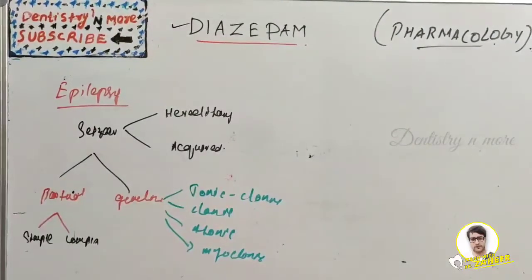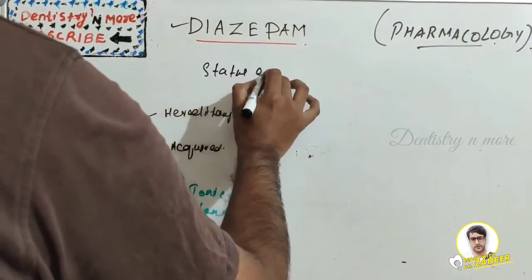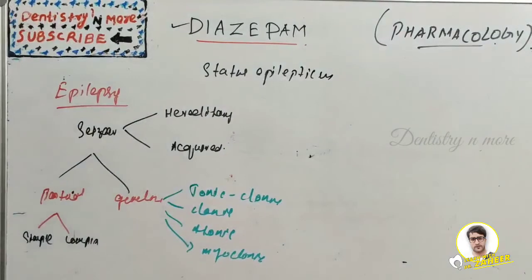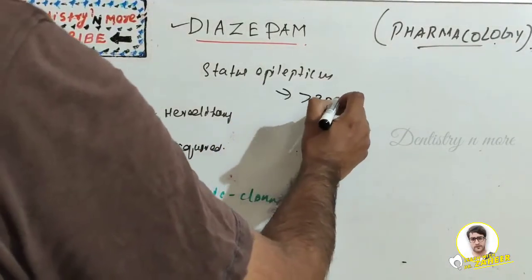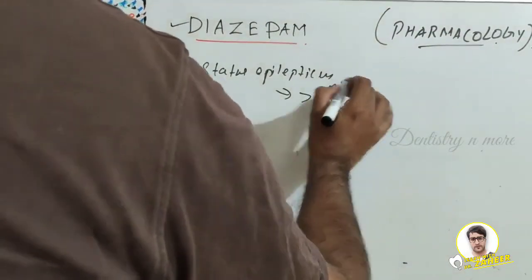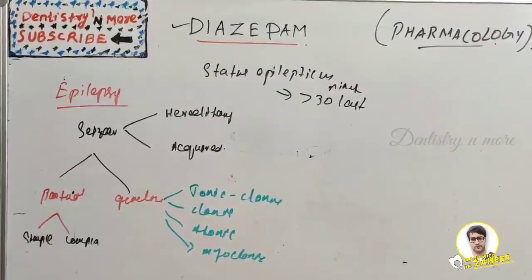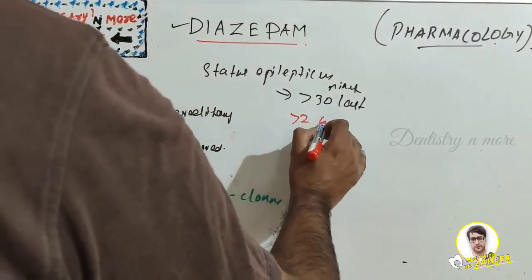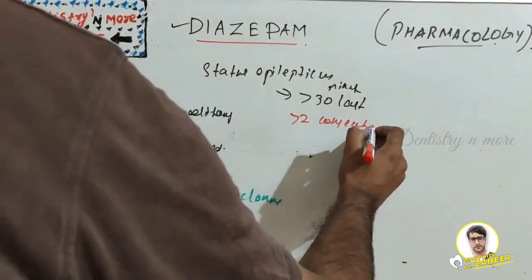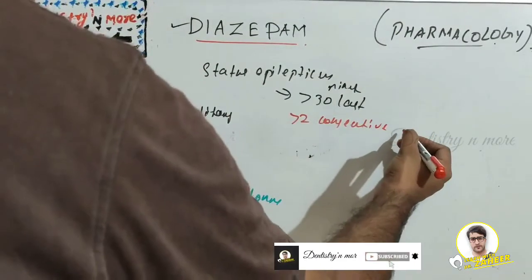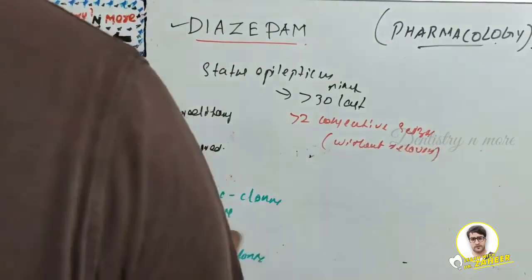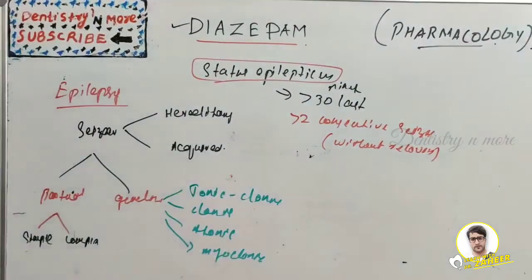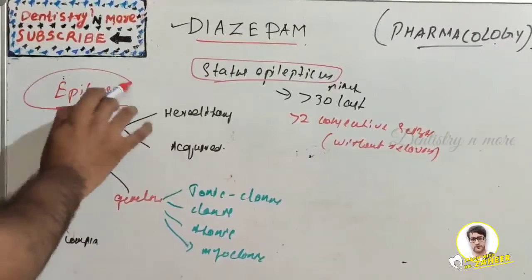The most serious condition is status epilepticus. It is a life-threatening condition where seizure activity lasts for more than 30 minutes, or involves two or more consecutive seizures without any recovery between them. That is very difficult to manage and falls under the broader category of epilepsy.